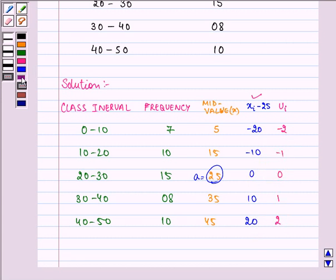And finally, we need to find out the value of f ui. So, it is 7 into minus 2, that is minus 14, 10 into minus 1, minus 10 and so on like this.